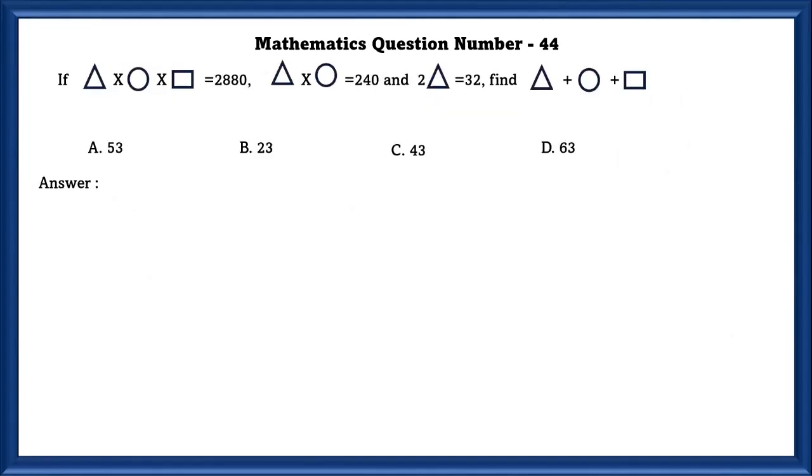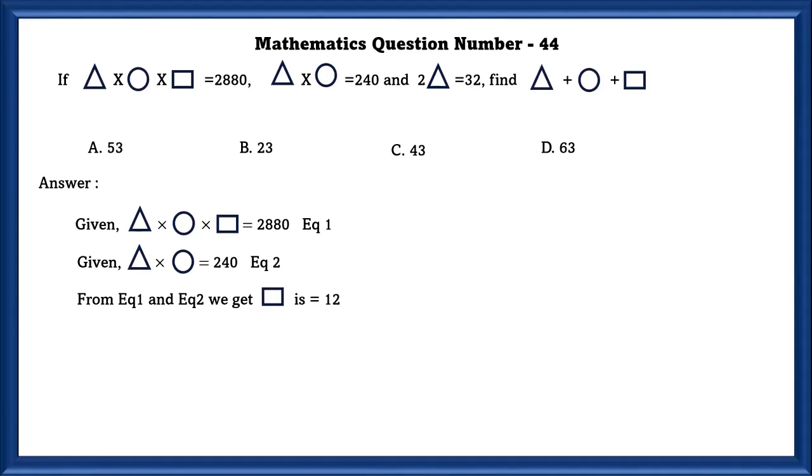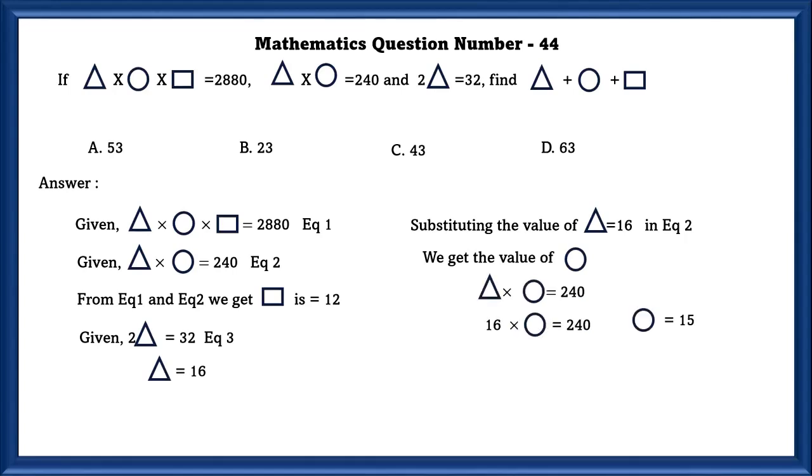Mathematics question number 44. If triangle times circle times square is equal to 2880, triangle times circle is equal to 240, and two triangle is equal to 32, then find triangle plus circle plus square. So we are writing what are given as equation 1 and equation 2. From equation 1 and 2, we can get the value of square, that is 12, and two triangles is equal to 32, that is equation 3. So we can divide 32 by 2 and we can get the value of triangle as 16. Substituting the value of triangle in equation 2, we get the value of circle, that is 15. So now we can find the value of triangle plus circle plus square, that is 43.